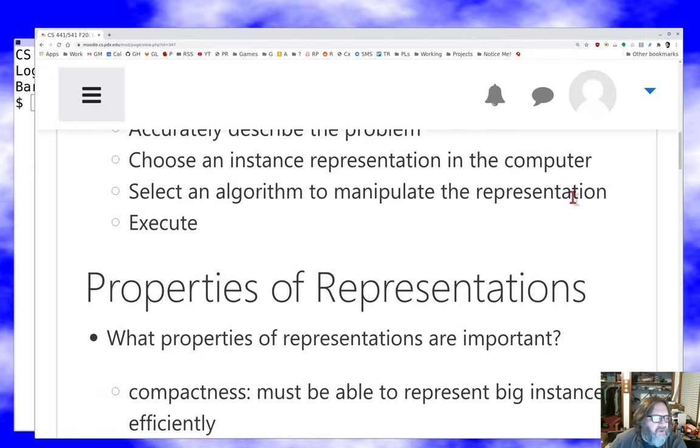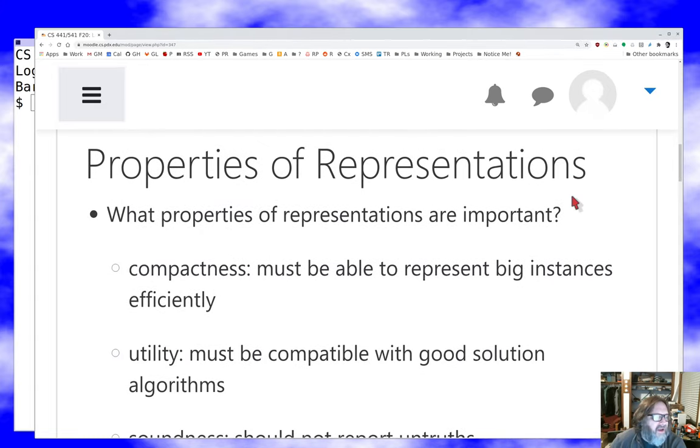When I'm choosing an instance representation in the computer, what properties do I want it to have? There's a lot of things I could try for. First of all, even as the instance gets large, I'd like the representations to be compact. If I'm not really careful about an efficient representation or a compact representation of data inside the machine, then I can really run out of memory fast. We've seen that with a lot of stop lists and that sort of thing that tend to grow exponentially with the size of the instance. We got to watch for those things.